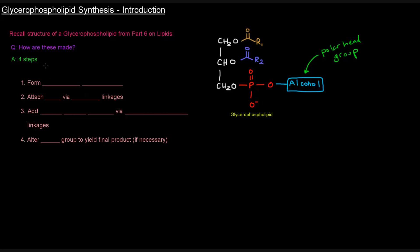There are four steps. The first thing that we do is we form the glycerol backbone, similar to what we did with the triglycerides. The second thing we do is we're going to attach these fatty acyl groups via those ester linkages here.